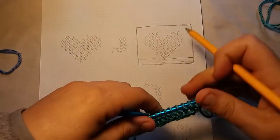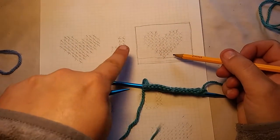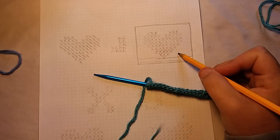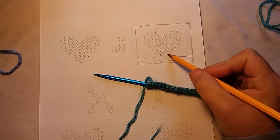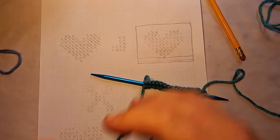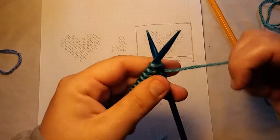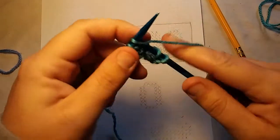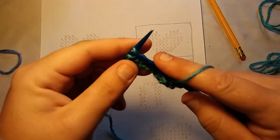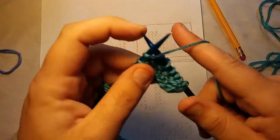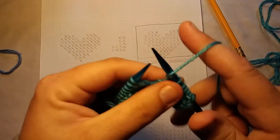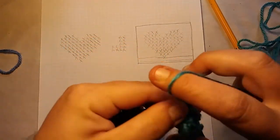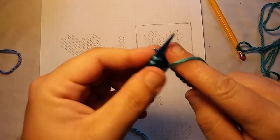All right. Next row is going to be a wrong side row. So, I'm going to refer to my little chart that I've made. And I've already done this one. So, I'm up here. One, two, three, four, five, six. I'm going to knit six, purl three, and knit the rest. So, I'm going to knit six. One, two, three, four, five, six. Now, I said I'm going to purl three. So, purl three. One, two, three. And then knit the rest.